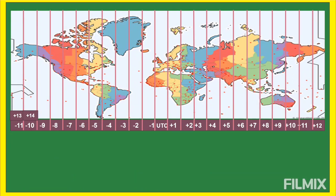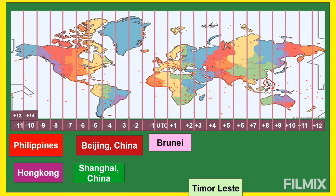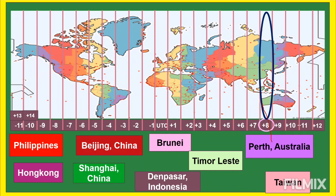Now we are at our very own Greenwich Mean Time, GMT+8 — this is where the Philippines is located. I'm proud to be a Filipina! The Philippines is composed of 7,107 islands and islets. Other places sharing the same time as the Philippines include Hong Kong, Beijing (China), Shanghai (China), Brunei, Timor-Leste, Denpasar (Indonesia), parts of Australia, and Taiwan, plus many other places under GMT+8.